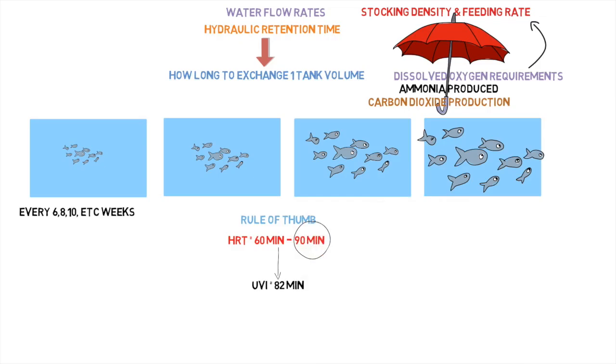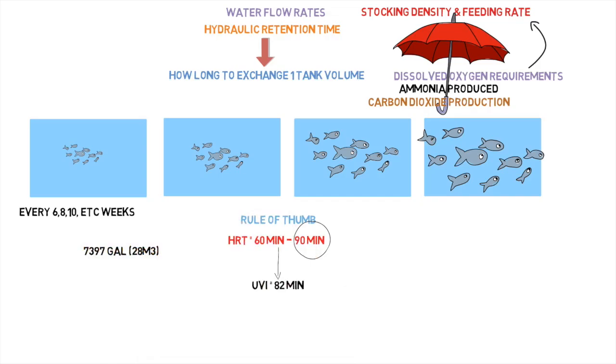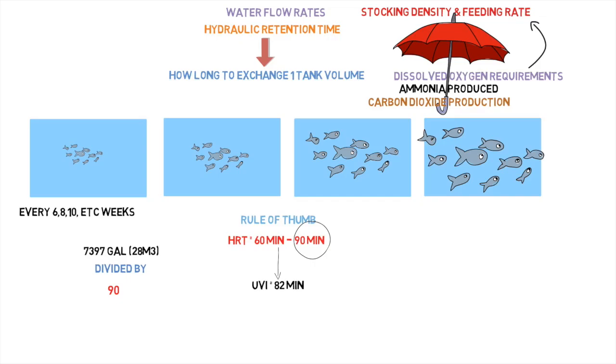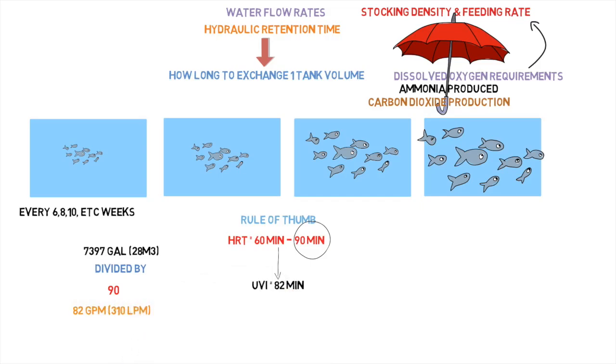So the first thing we're going to do is take our total water volume from the fish tank, which is 7,397 gallons or the seven cubic meters. And what we're going to do is divide that by the hydraulic retention time that we want, which is 90. So 7,397 divided by 90, that's going to give us 82 gallons per minute. So with this flow rate here, what we need to do is divide that amongst the tanks.